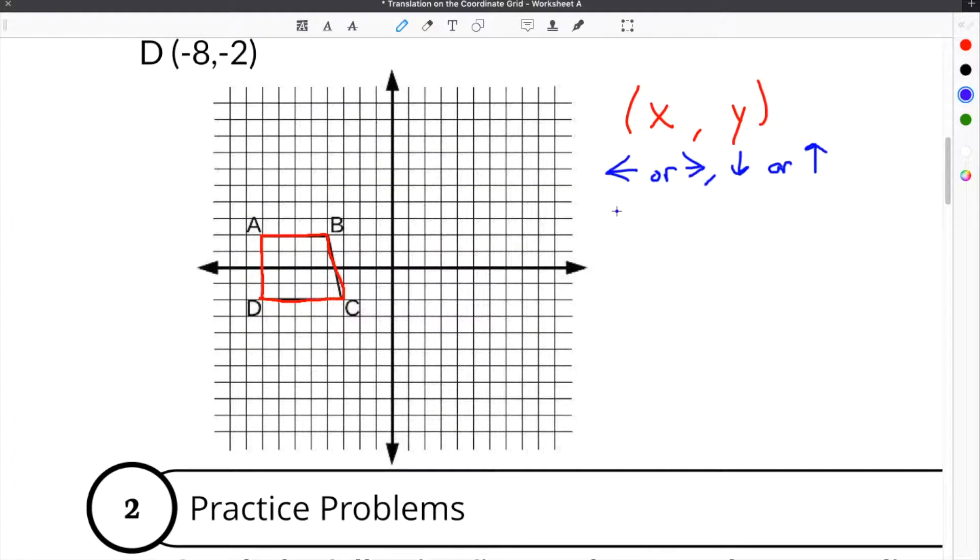For the figure to go left, that means you're going to subtract from the x coordinate. If it's going to go right, you have to add to the x coordinate. For it to go down, you're going to subtract from the y, and then if it's going to go up, you will add to the y.